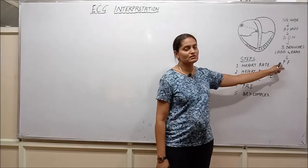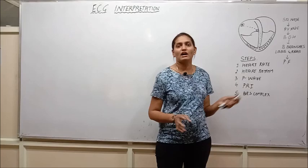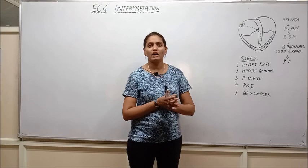When it starts from the SA node and goes towards the AV node the atrial contraction occurs and the whole cardiac conduction system will be seen as a cardiac cycle and the recording of this cardiac cycle or the electrical activity of the heart is known as electrocardiography.